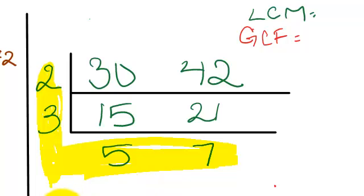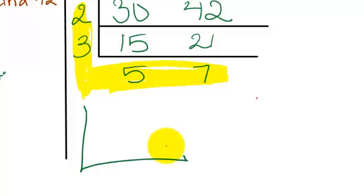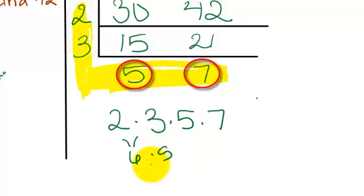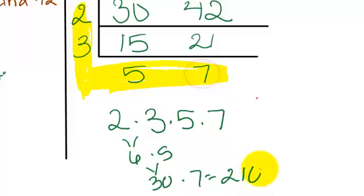We know that we're finding the LCM because the highlight is in the shape of an L. So we're going to do 2 times 3 times 5 times 7, which is 6 times 5, which is 30, times 7, which is 210.